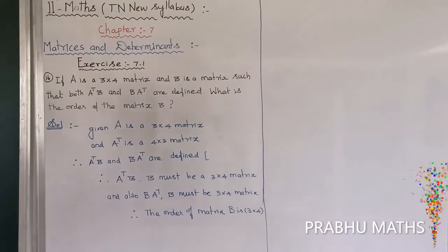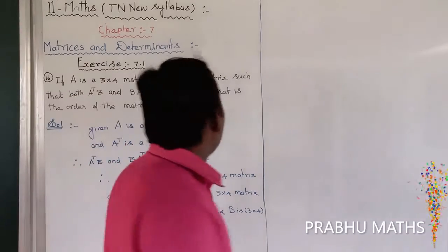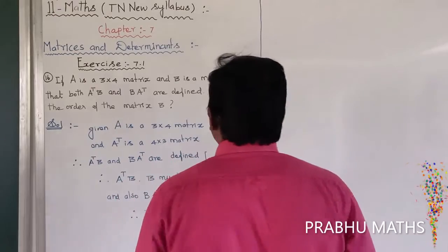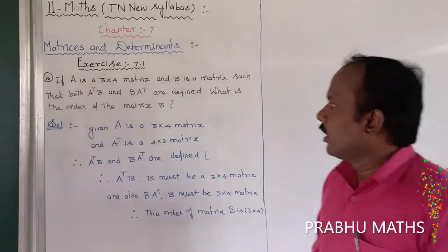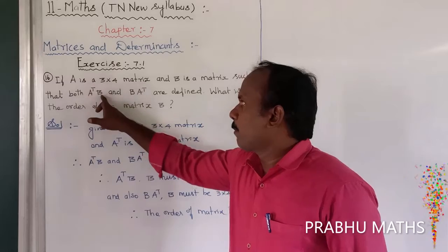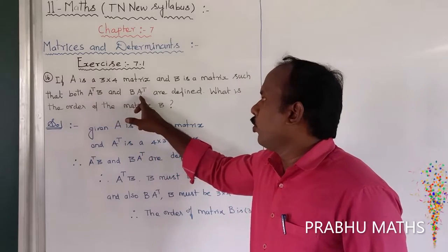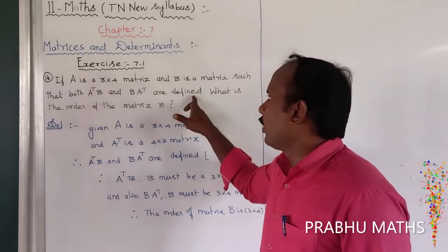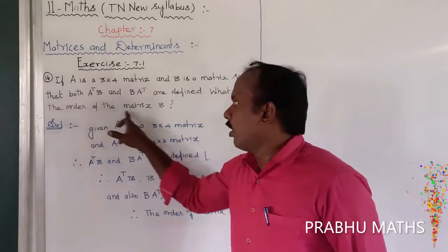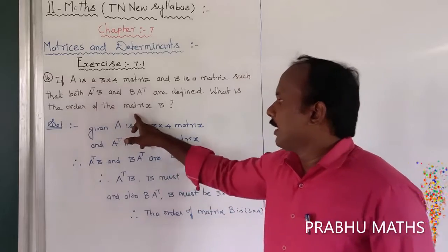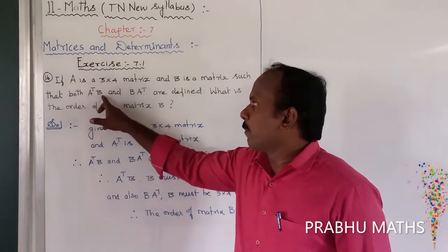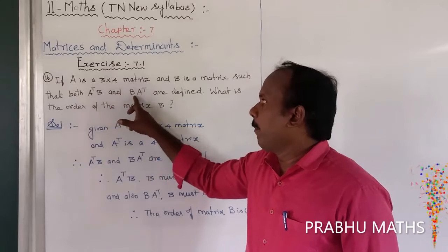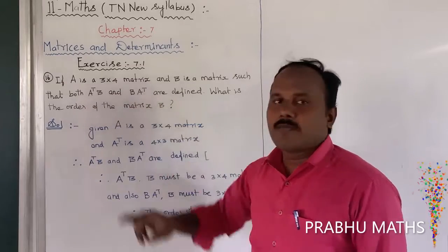If A is a 3 by 4 matrix, and B is a matrix such that both A transpose B and B into A transpose are defined, what is the order of matrix B? The condition that these products are defined means matrix multiplication is eligible.